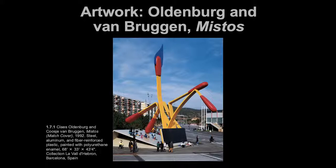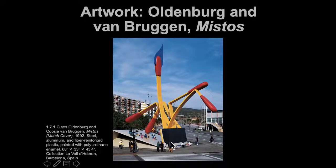Artist Claes Oldenburg and his wife Coosje van Bruggen use scale with a great sense of humor. This match cover sculpture is enormous — look at the scale of the humans beside it. It's monumental and beyond. It's made to look semi-realistic and toy-like, functioning like an old-fashioned match cover where the matches bend. People can get under and around it. He's worked with all kinds of materials including fabric, and even did inflatable sculptures — like an inflated lobster on the side of a building in Boston — playing with our sense of being the small thing.